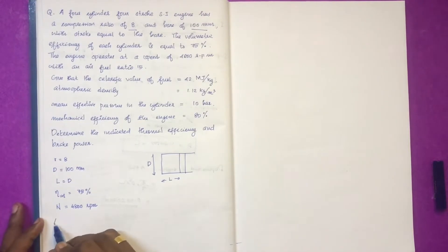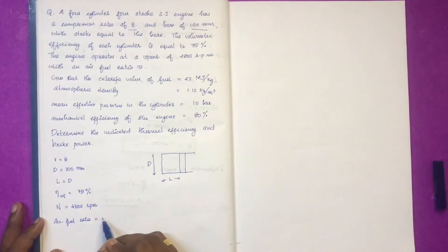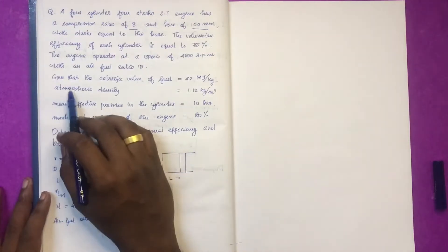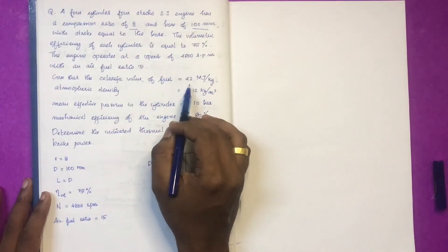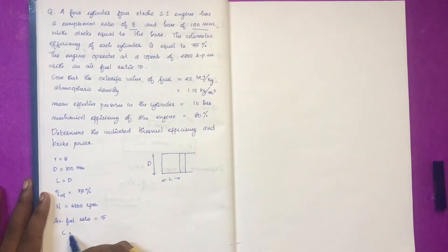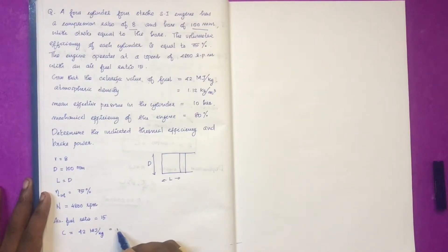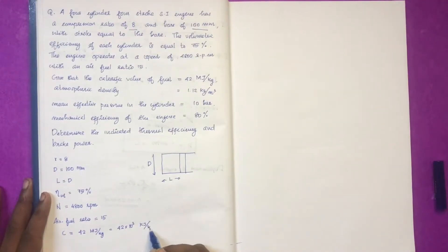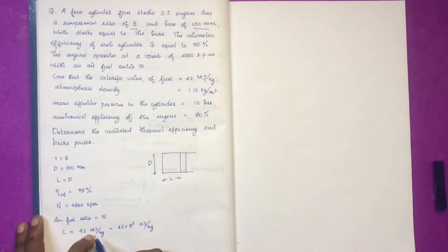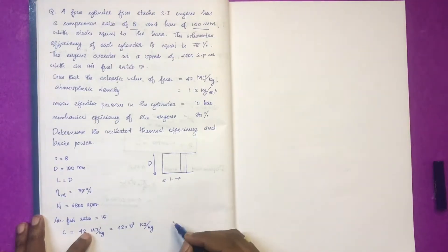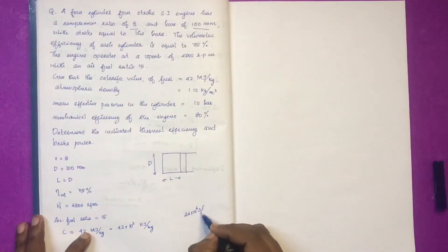The air-fuel ratio — that is, mass of air to mass of fuel — is equal to 15:1. The calorific value of the fuel, C, is equal to 42 megajoules per kilogram, which is 42 × 10³ kilojoules per kilogram.